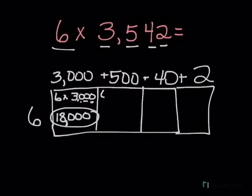My next one is 6 times 500. 6 times 5 is 30, and I have 2 zeros. So 6 times 500 is 3,000.